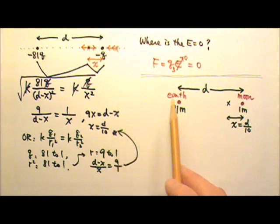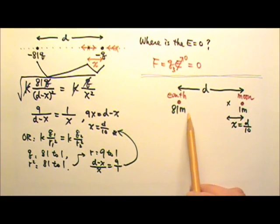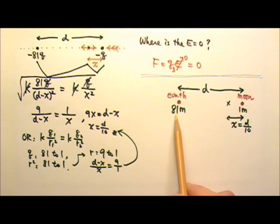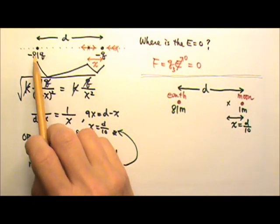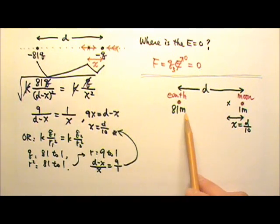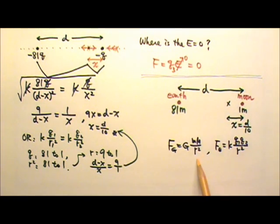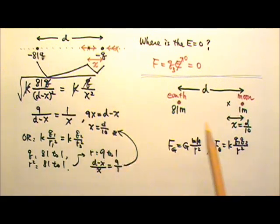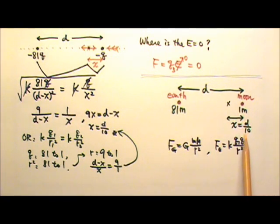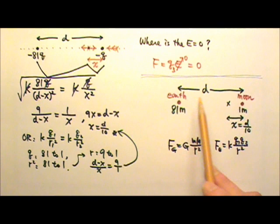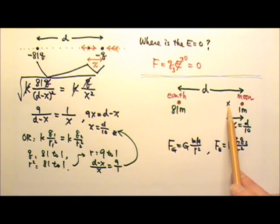This type of problem can also appear in the gravitation unit. The mass of the Earth is about 81 times that of the Moon — similar to 81q and 1q — so this is like 81m and 1m. Because Newton's law of gravitation has the same format as Coulomb's law, a spaceship located one-tenth of the total distance away from the Moon would experience zero net gravitational force from the Earth and Moon combined.